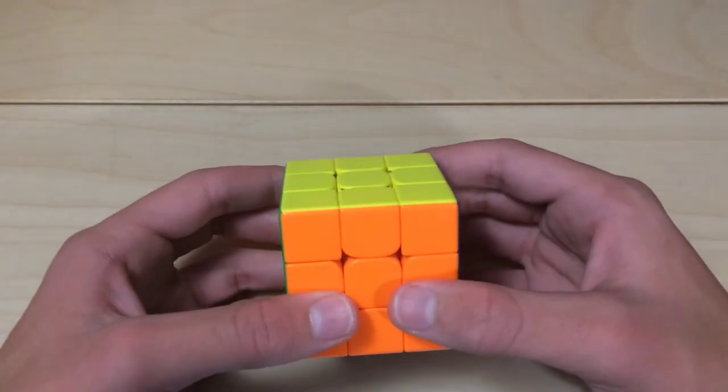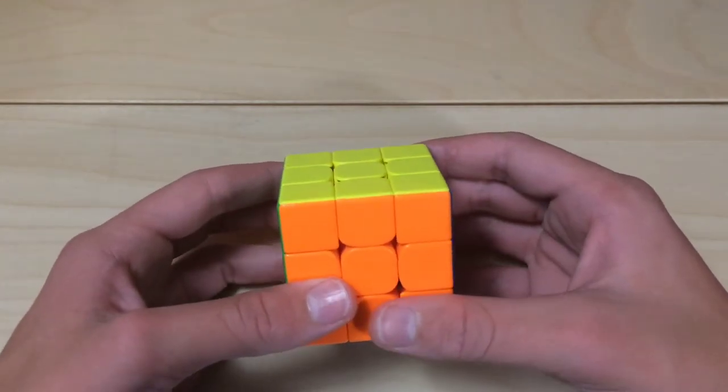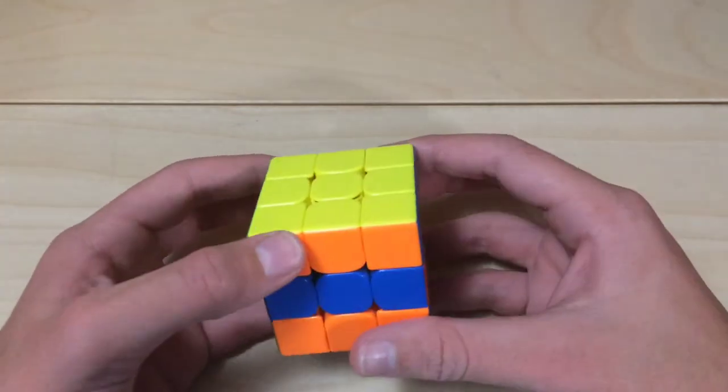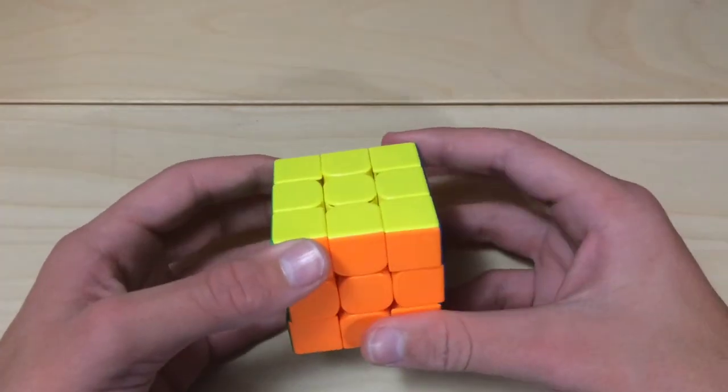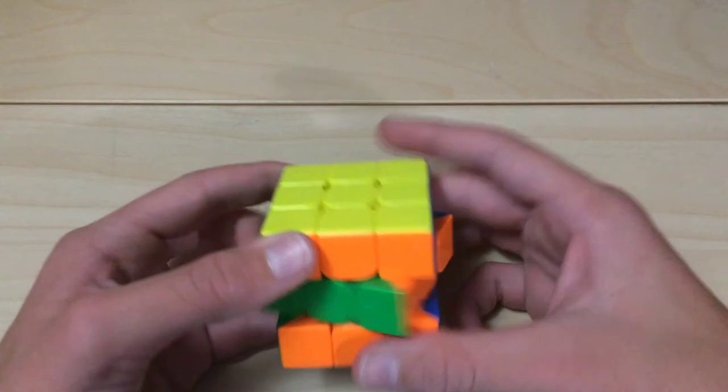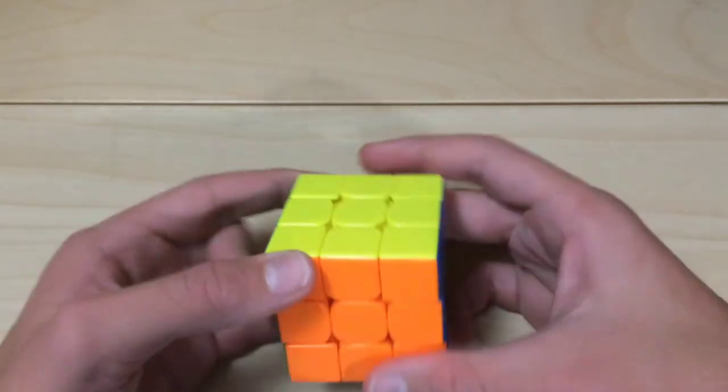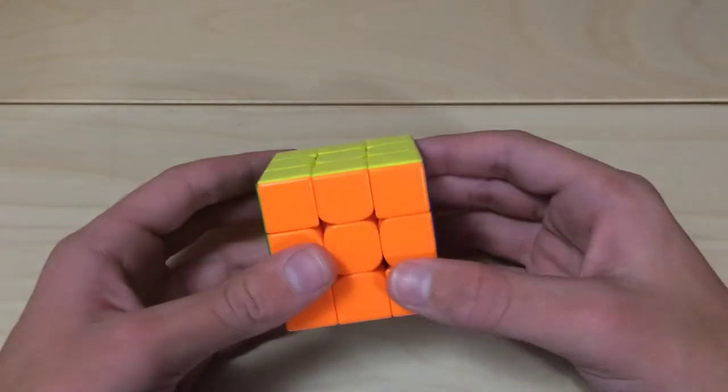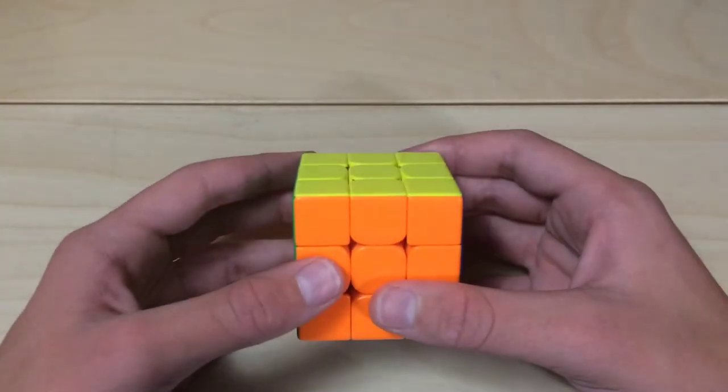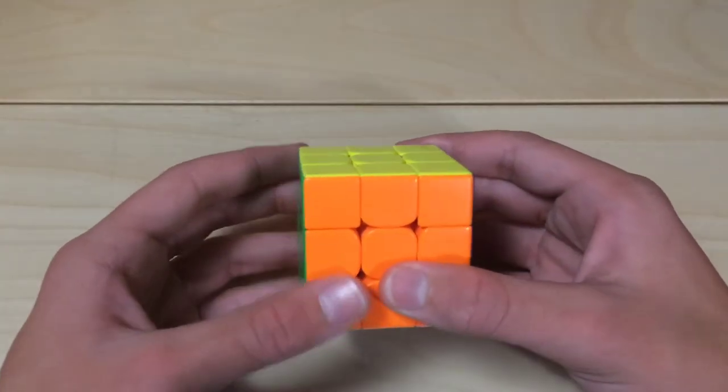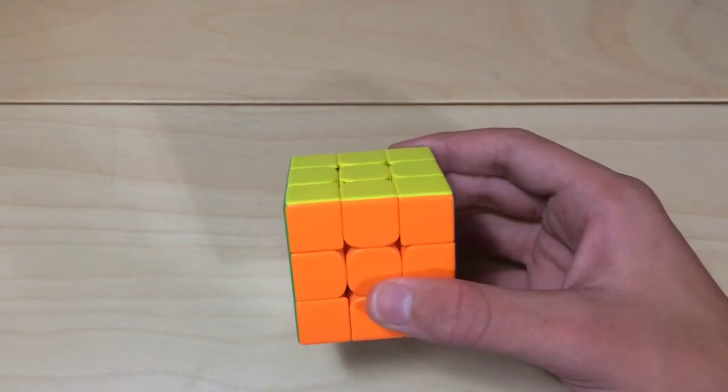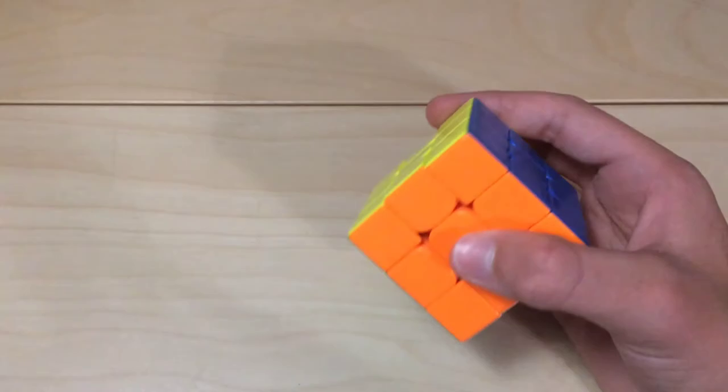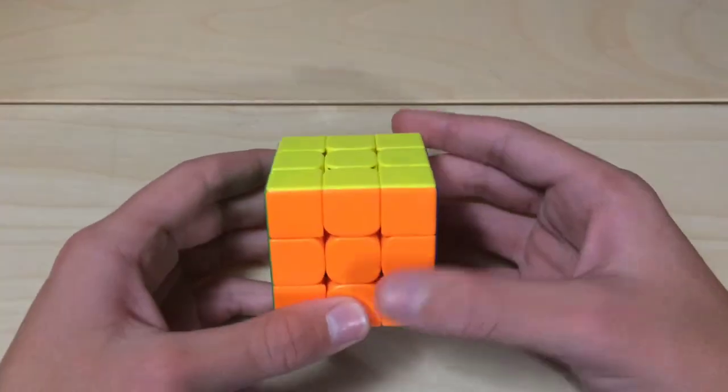So with OLL, you can actually cut down the OLLs you have to learn from like 57 to somewhere in the 30s, I think. I think there's almost 20 different mirror cases. So that means that you can pretty much shave off one-third of what you have to learn from OLL by using lefty algs and mirror cases. So that's useful.